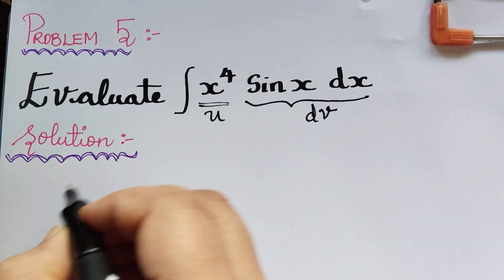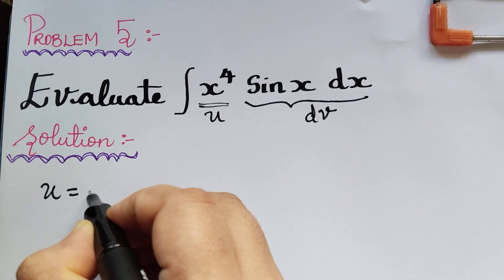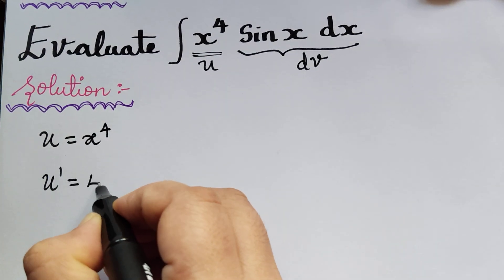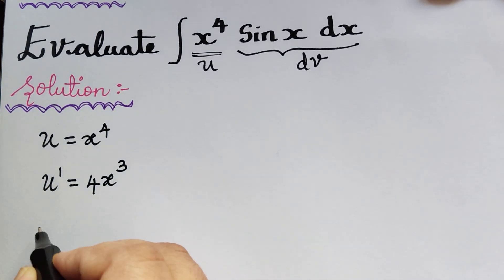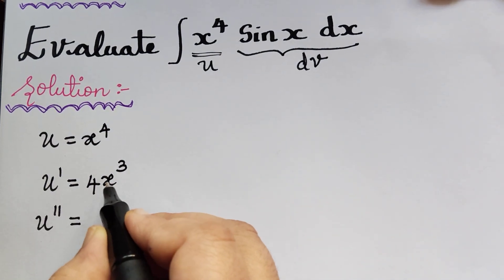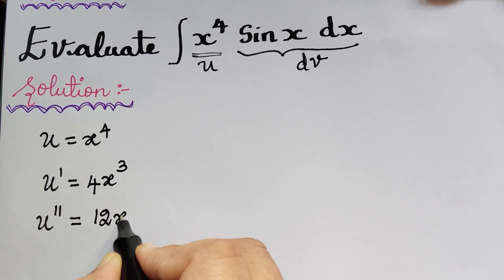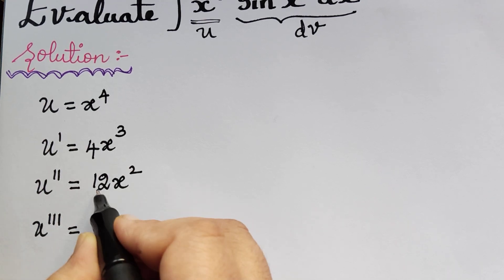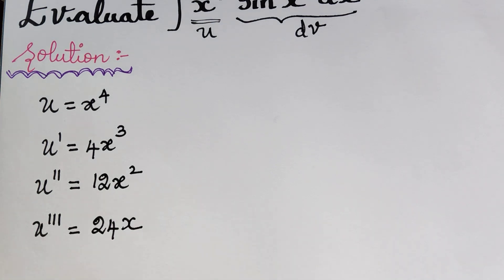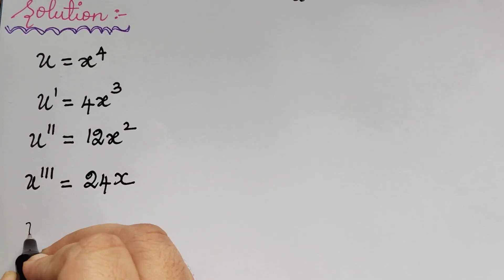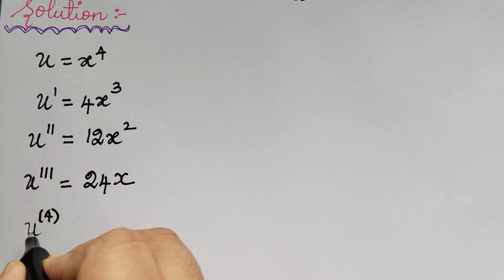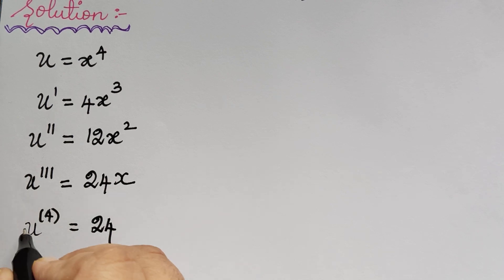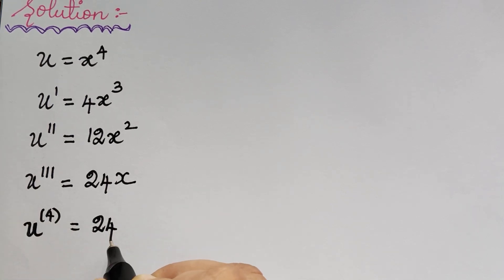First we take u equal to x to the power 4. Differentiating, u' equals 4x³. Differentiating again, u'' equals 12x². Differentiating further, u''' equals 24x. The fourth differentiation u'''' equals 24. We stop here because we have arrived at a constant, and the differentiation of a constant is 0.